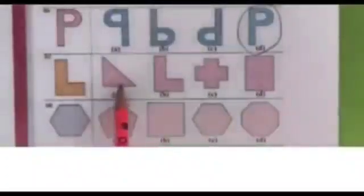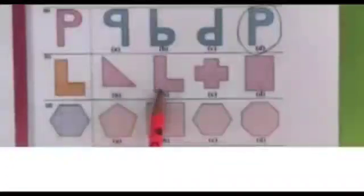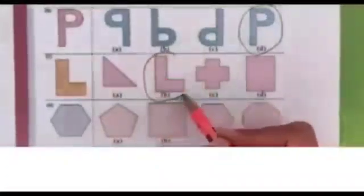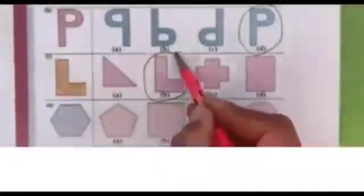Now we will find the same sized and shaped figure to the given figure. Are these two figures the same? No. Are these two figures the same? Yes, they are the same. So we will draw a circle around it.